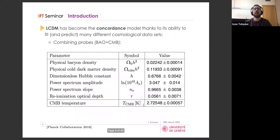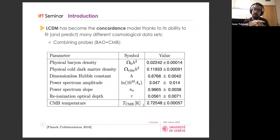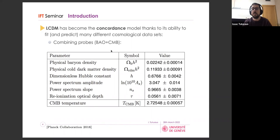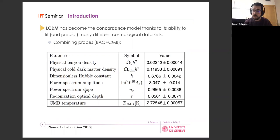Different probes are sensitive to different aspects of how gravity acts in the cosmos, and combining them allows us to break degeneracies and improve constraints on cosmological parameters. As of 2018, combining BAO and CMB measurements gives the six ΛCDM parameters — baryon and cold dark matter densities, the Hubble constant, amplitude and slope of the primordial power spectrum, and the reionization optical depth — all constrained to better than percent level.